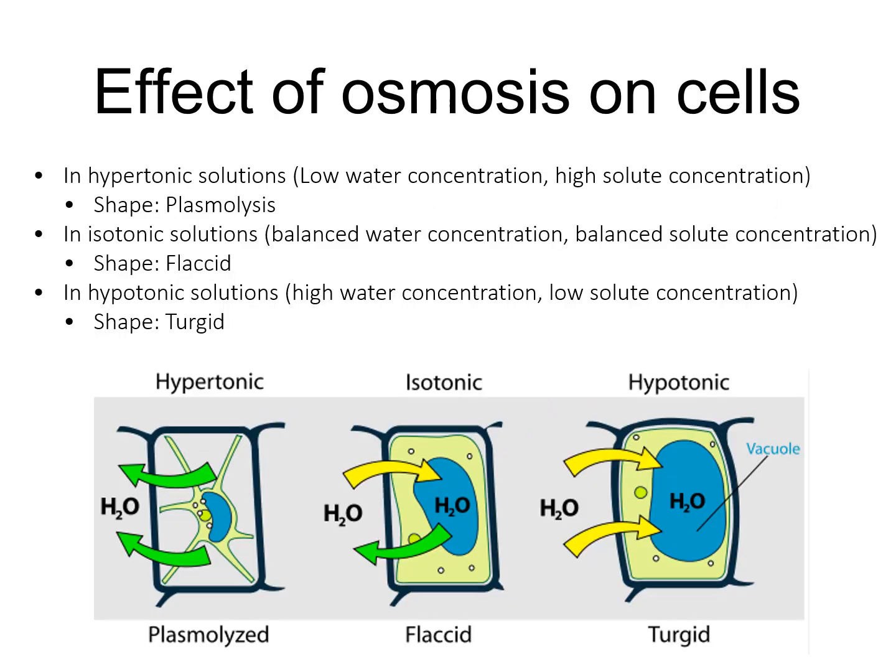Looking at the effect of osmosis on cells: in hypertonic solutions, which involve low water concentration and high solute concentration, the cell shape is referred to as plasmolysis — you can see the plasmolyzed cell in the diagram. In an isotonic solution, where there is balanced water and solute concentration, the shape is referred to as flaccid. In hypotonic solutions, with high water concentration and low solute concentration, the shape is referred to as turgid.